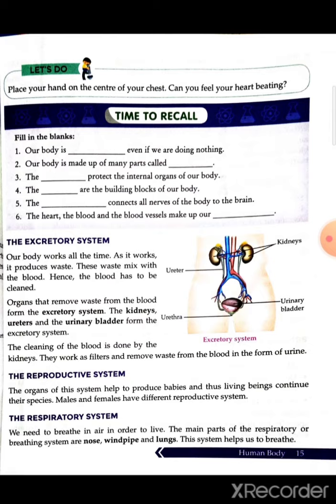Next is the excretory system. Our body works all the time, and as it works, it produces waste. This waste mixes with the blood, so the blood has to be cleaned. The organs that remove waste from the blood form the excretory system — the kidneys and the urinary bladder. The cleaning of the blood is done by the kidneys; they work as filters and remove waste from the blood in the form of urine.